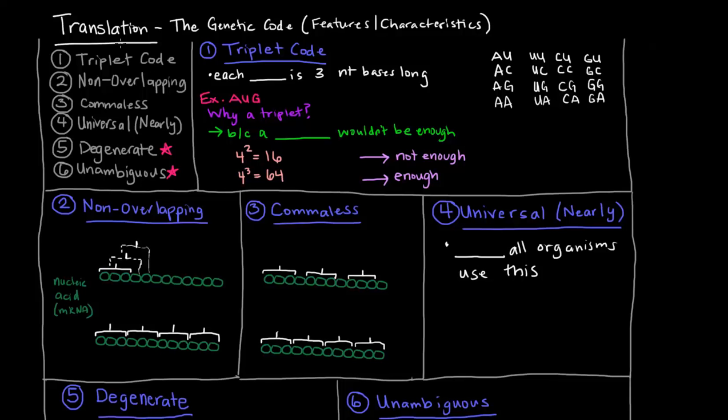In this video, I want to begin our discussion of translation, which is the last part of the central dogma, where we turn mRNA into proteins. Before we can discuss the details of it, we need to consider the genetic code, its features and characteristics. So I've written the six things that I want to talk about here. The genetic code is a triplet code that is non-overlapping and comma-less, it's nearly universal, and it's also degenerate and unambiguous. So what do all these things mean?